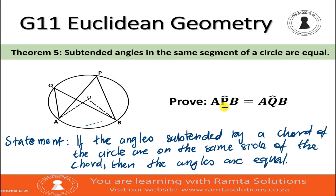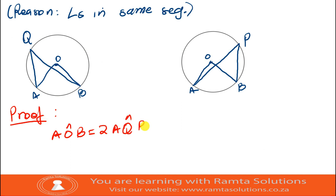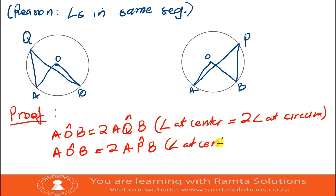Now let's prove that angle APB is equal to angle AQB. You will agree that angle AOB is equal to two times angle AQB — the reason being: angle at center equals two times angle at circumference. We're using Theorem 3 here. Again, angle AOB is also equal to two times angle APB, for the same reason: angle at center equals two times angle at circumference.